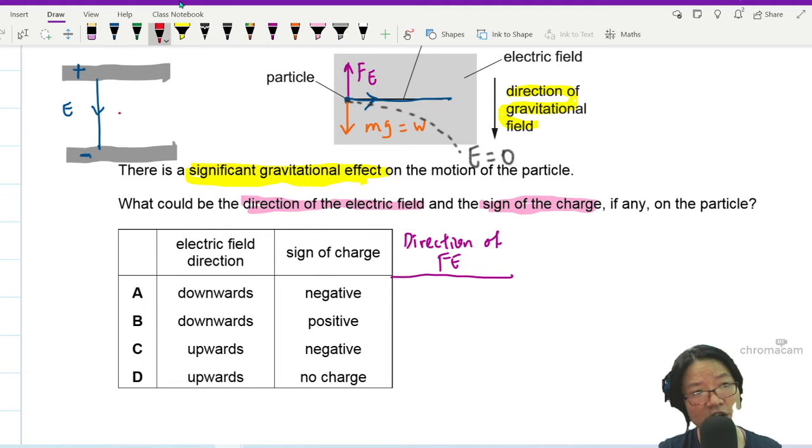If you have a negative charge inside this parallel plate, the negative charge will be attracted to the positive plate. So this is the direction of FE. So this one is up. So A is a viable candidate.